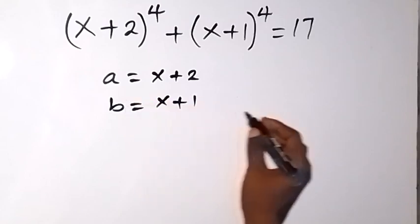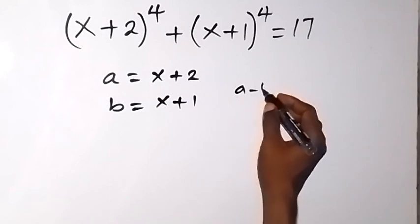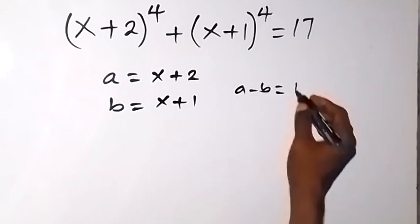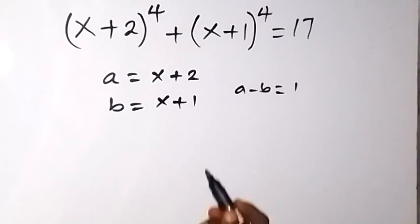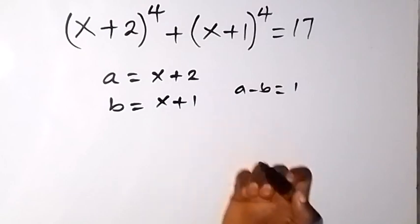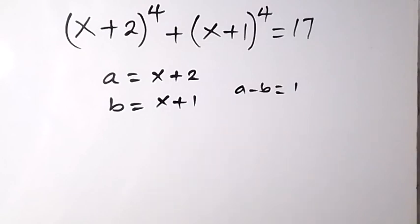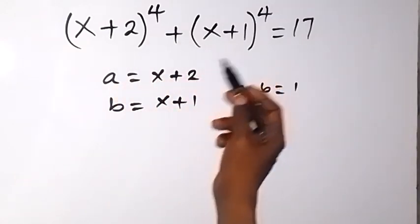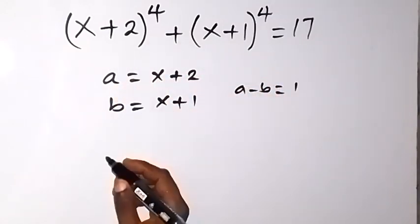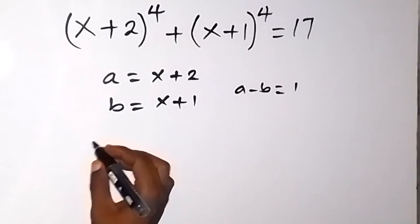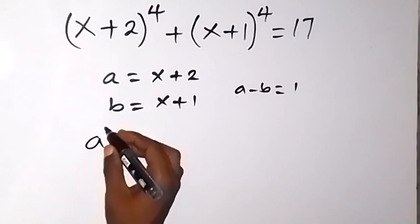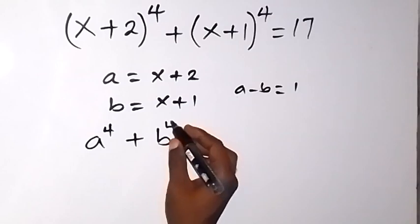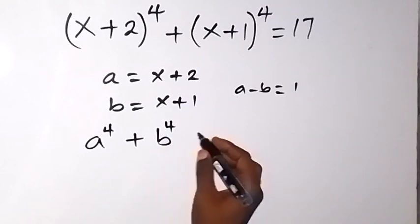When we subtract, a minus b gives us 1, because x minus x is 0 and 2 minus 1 is 1. Now let's replace with a and b, so the equation becomes a⁴ + b⁴ = 17.